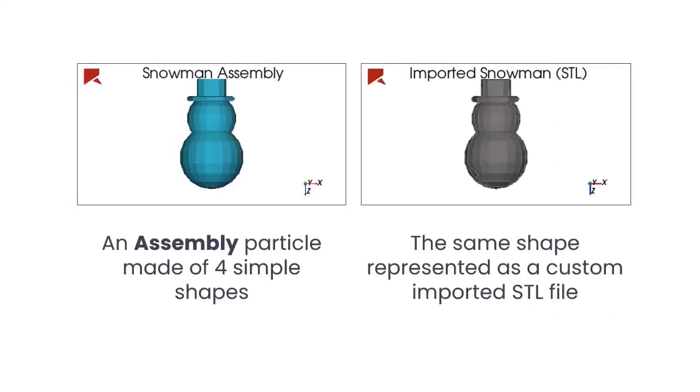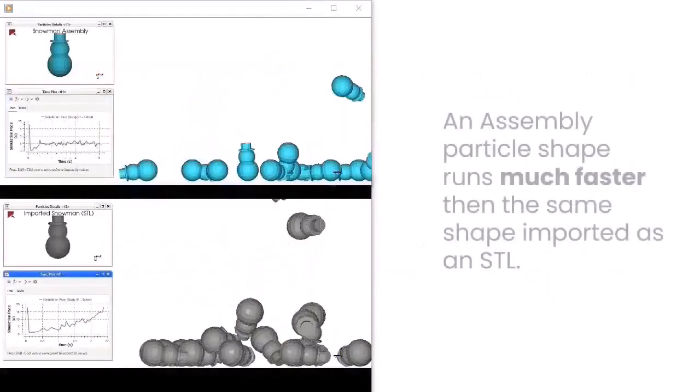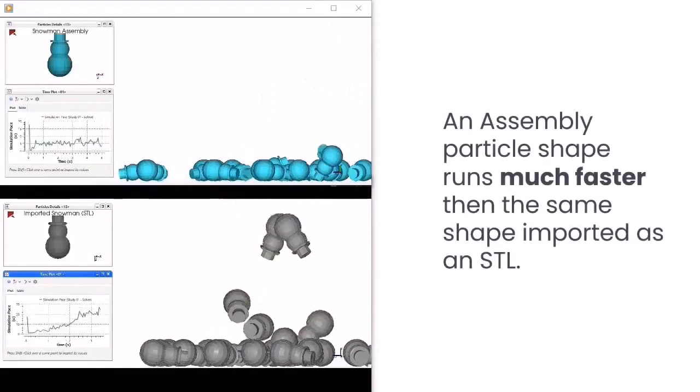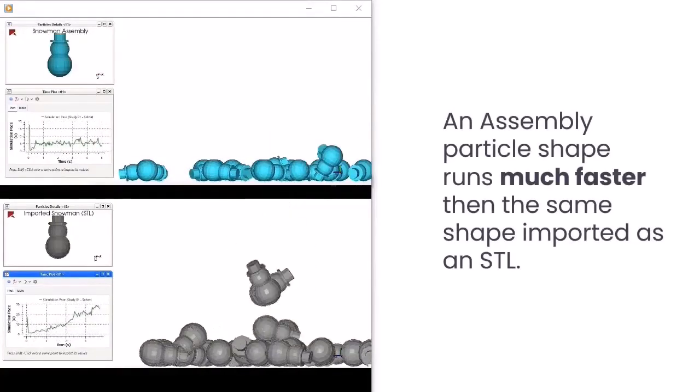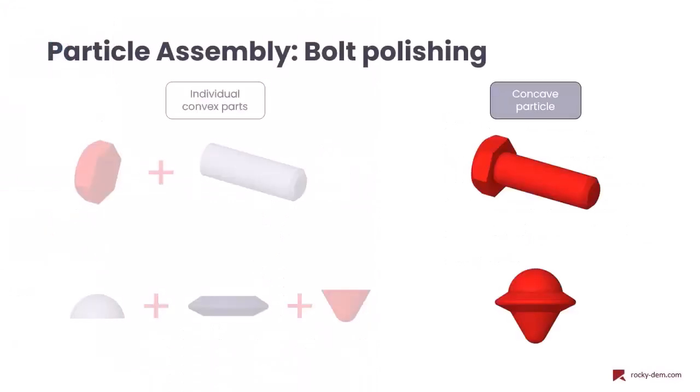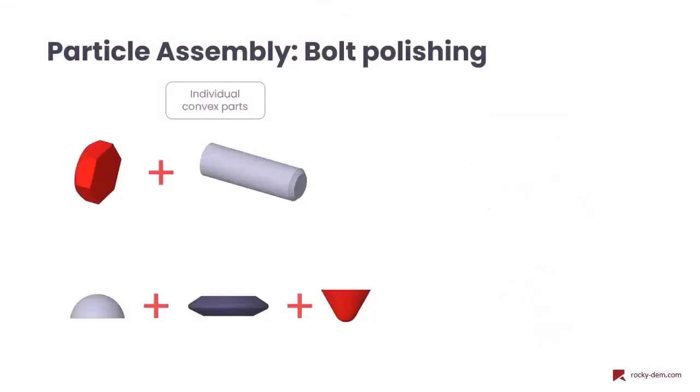When compared to importing a similar shaped STL file, an assembled particle can be much faster to run due to simpler calculations. Especially when using convex shapes to represent a concave shape, the performance gains can be significant.